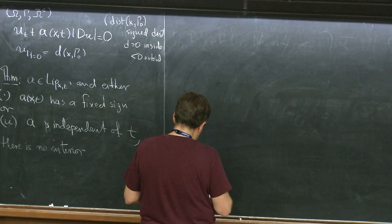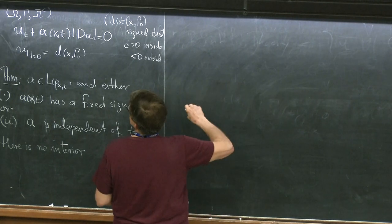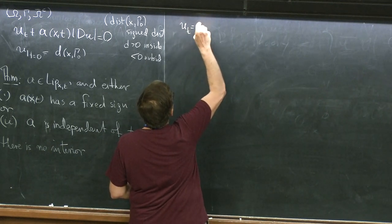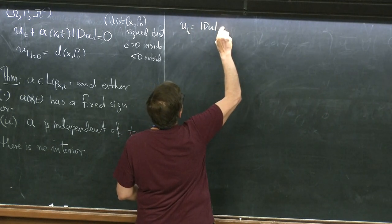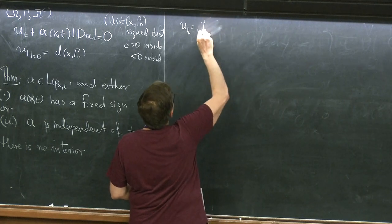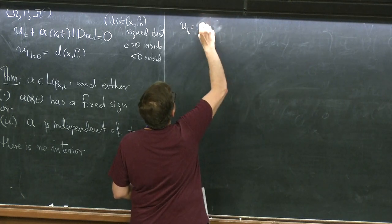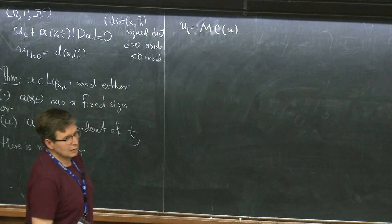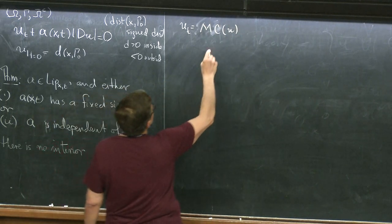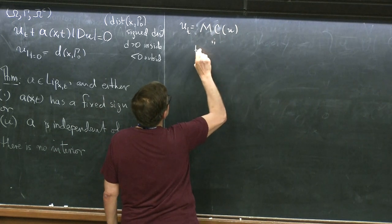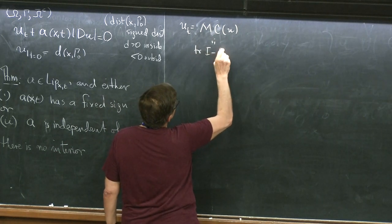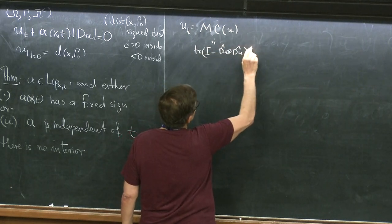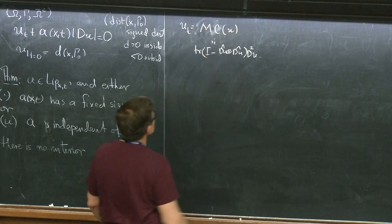The next result has to do with motion by mean curvature. For simplicity, I'm going to write MCU, which means the trace of identity minus du tensor du over |du|², times d² of u. That's the definition of MCU.